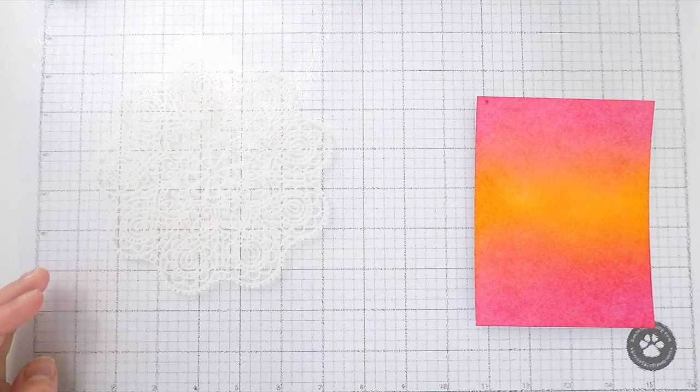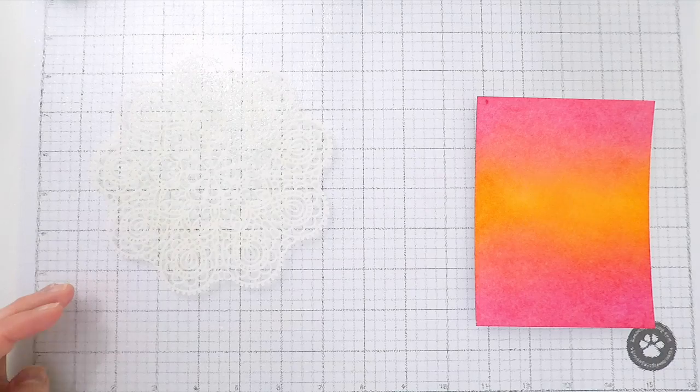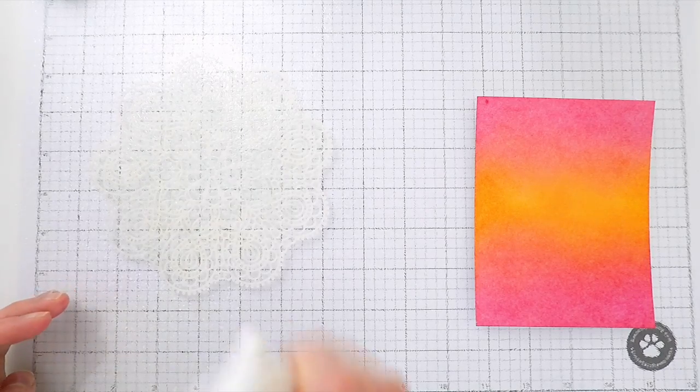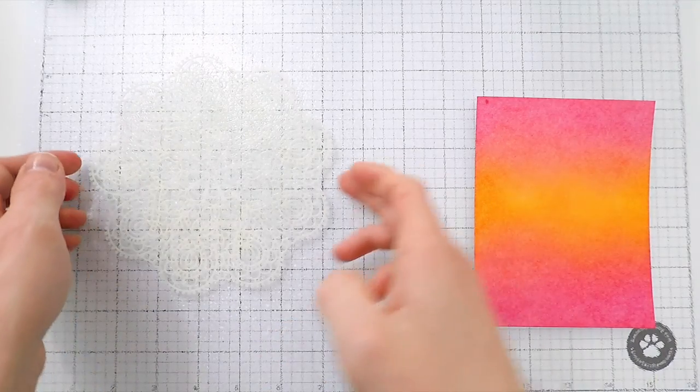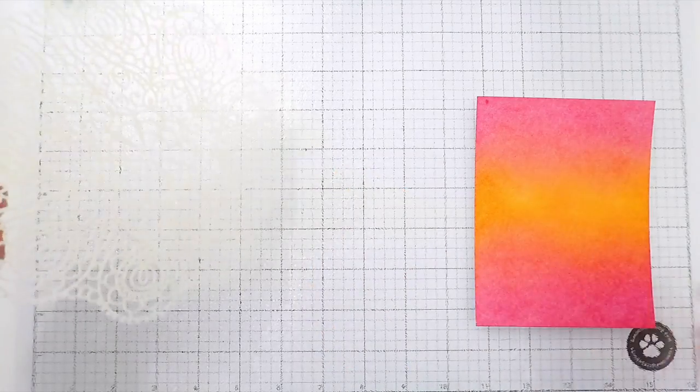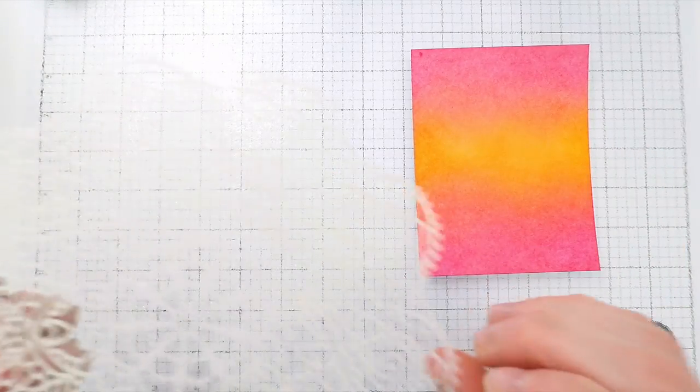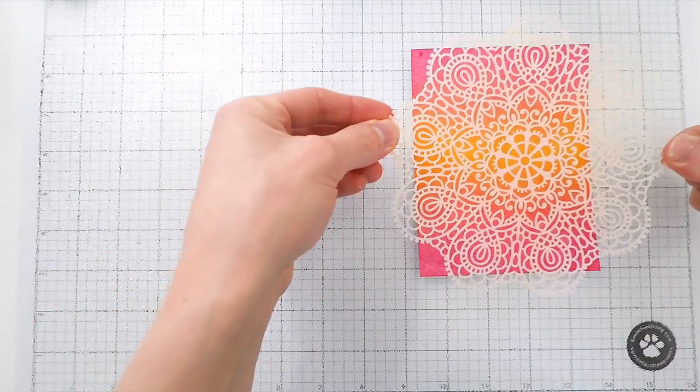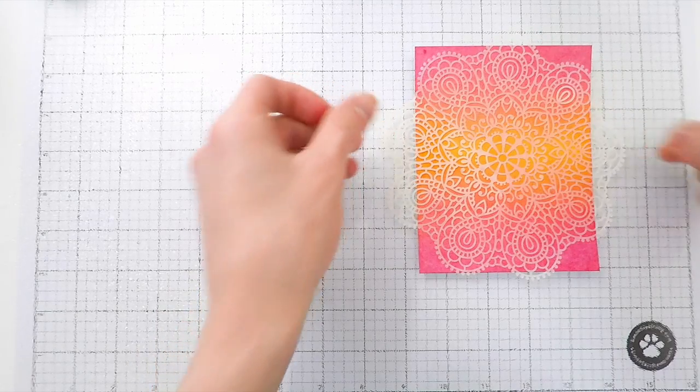To create the ghost-like impression, I'm taking a stencil here from Simon Says Stamp and I'm misting it with water. I misted it quite heavily so that way the entire stencil is covered with that water. I'm going to lay the stencil onto my ink blended panel and let that sit for about a minute.